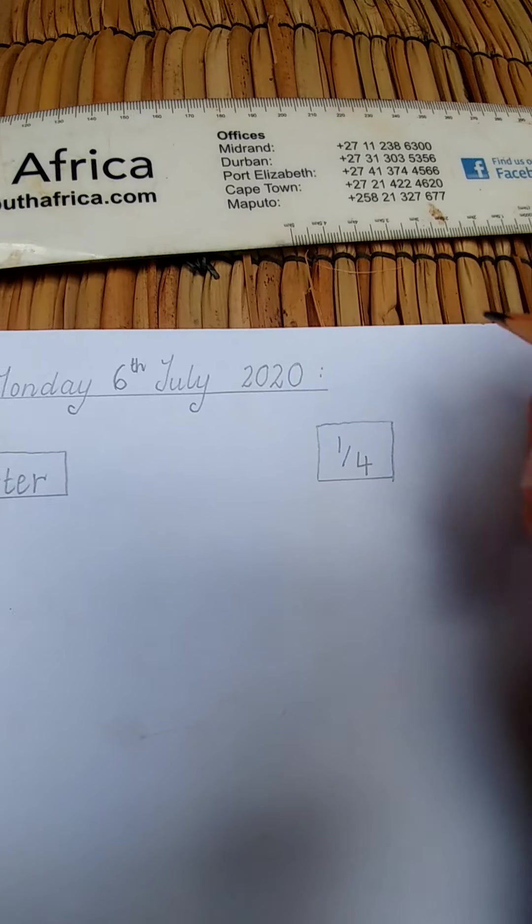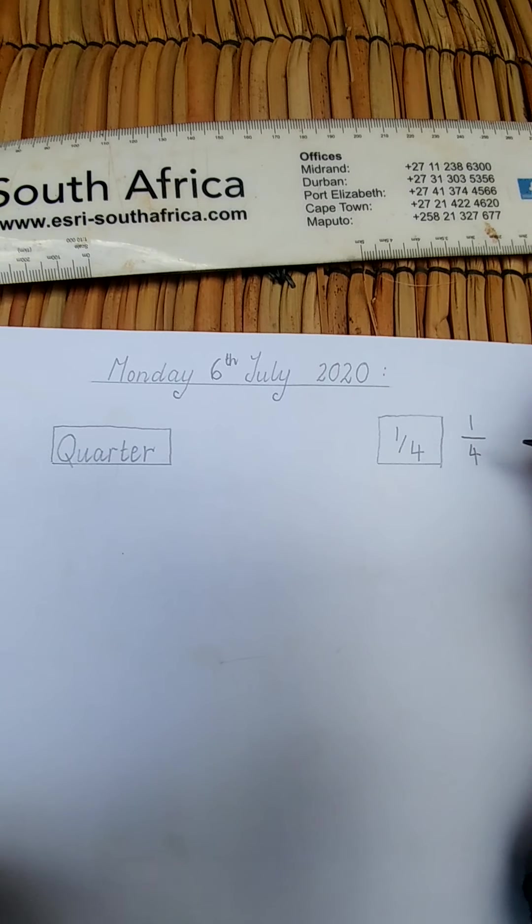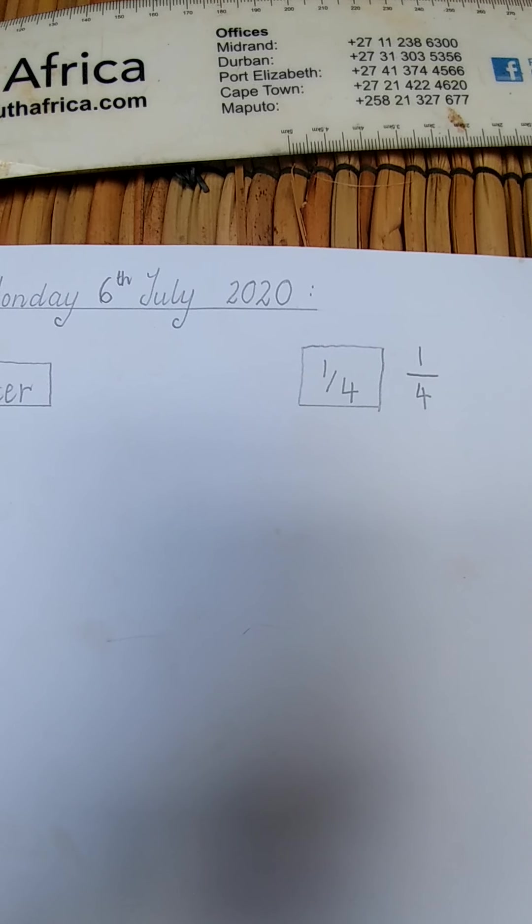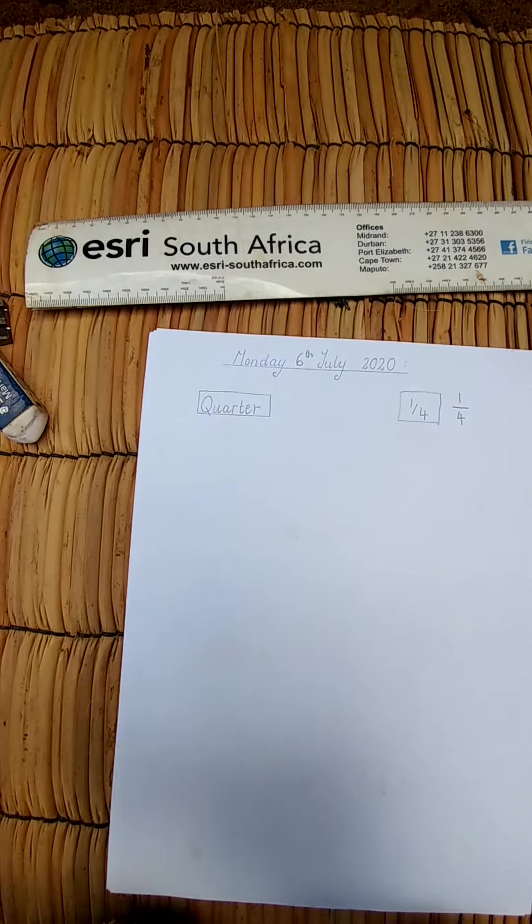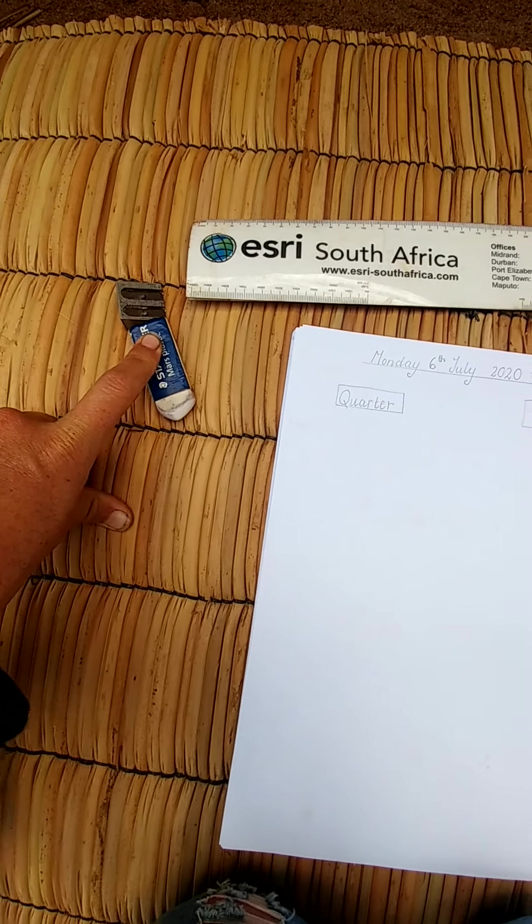I've done it sideways, you can also write it 1 over 4, it's the same thing. You are going to need a rubber and a pencil in case you need to rub something out or sharpen.